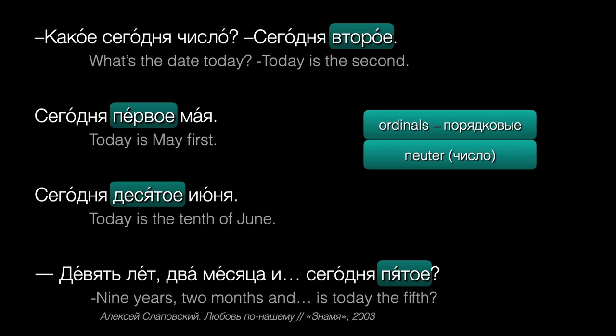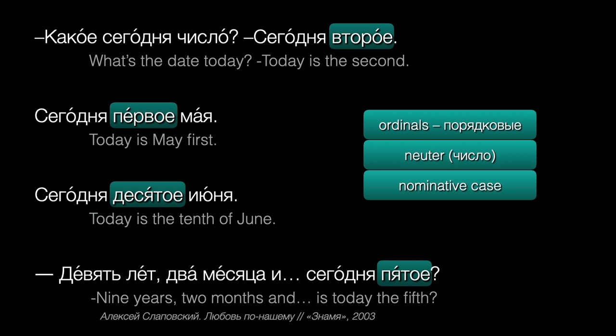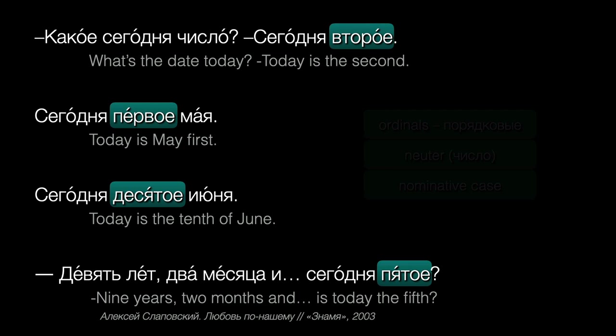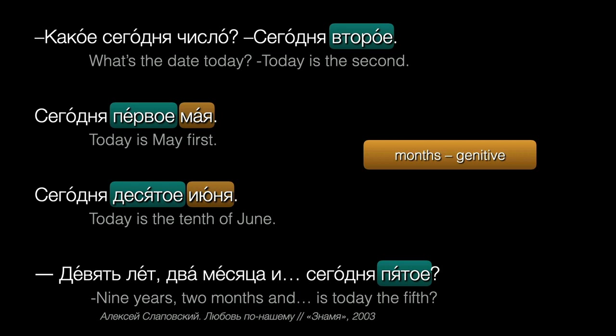Now what about the case ending? When we just mention the date, we'll use the nominative case: второе, первое, десятое, пятое. But notice that if we mention the month, that month will be in the genitive case: мая, июня.